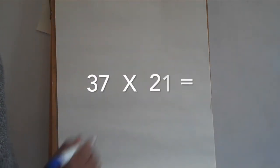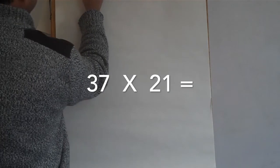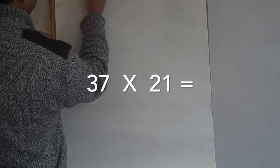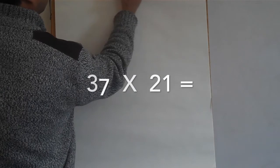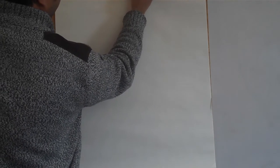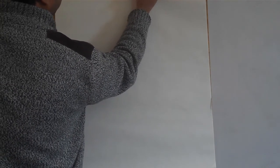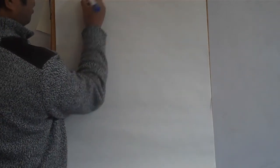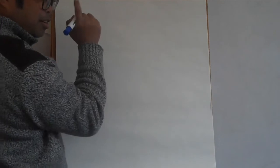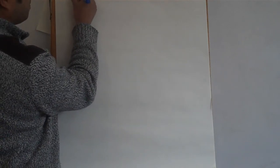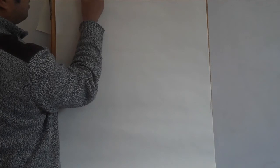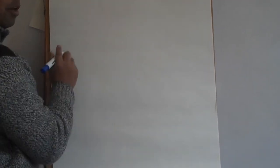The question is thirty-seven times twenty-one. The first thing we need to do — step A — is we always start with one.